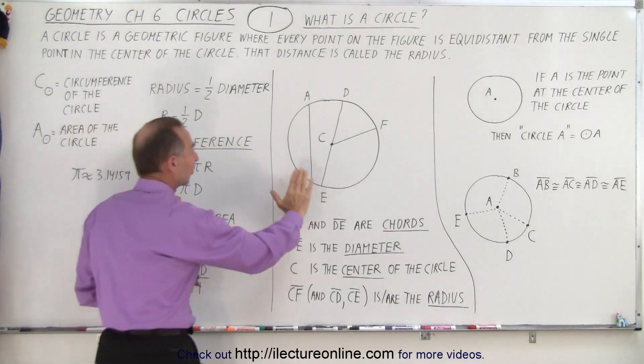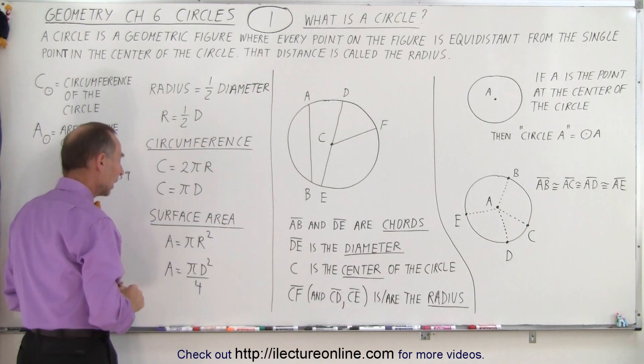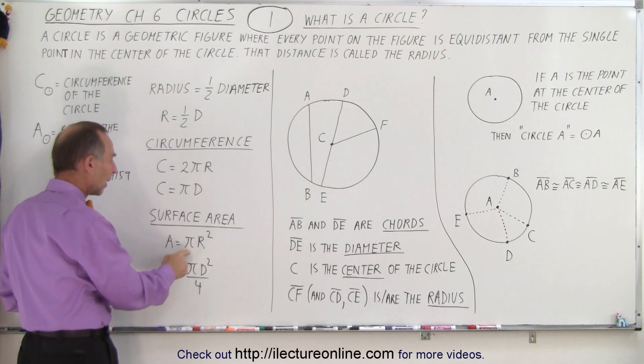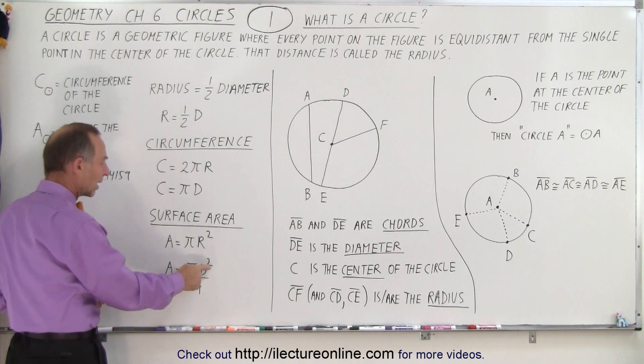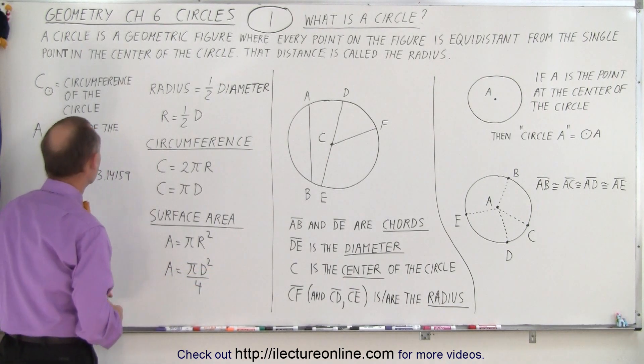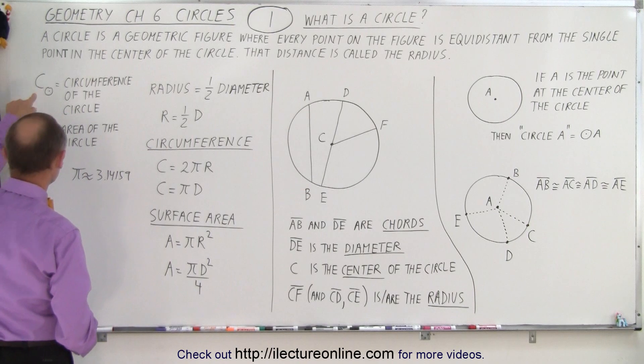We can also talk about the surface area of a circle, and the surface area is equal to π times the radius squared, or if we want to use diameter, it would be π times the diameter squared divided by 4.